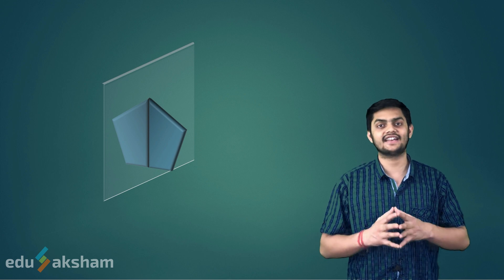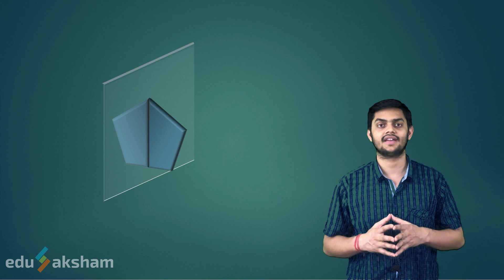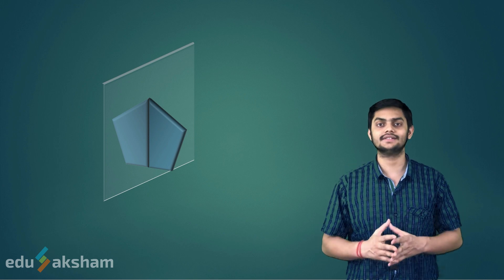Now, we have a quadrilateral. Its mirror image is exactly identical to it. The mirror acts as a line of symmetry for these two quadrilaterals. And if we observe closely the quadrilateral and its image together, they form a pentagon.